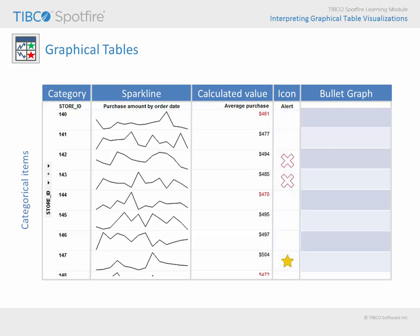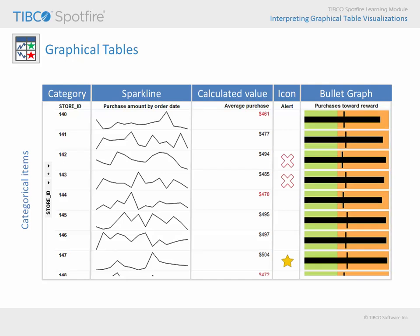Icons are useful when actual values are not as important as the flags themselves. These icon alerts are the result of high or low customer purchase amounts of specific sale items at each store. And bullet graphs can be added to measure the progress toward a goal or relate values to specific milestones. Here, each store has reward goals which they are striving to achieve with select sale items.